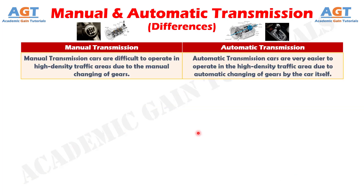And difference number 17. Manual transmission cars are difficult to operate in high-density traffic areas due to the manual changing of gears, whereas automatic transmission cars are very easy to operate in the high-density traffic area due to automatic changing of gears by the car itself.